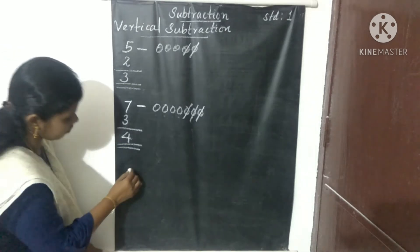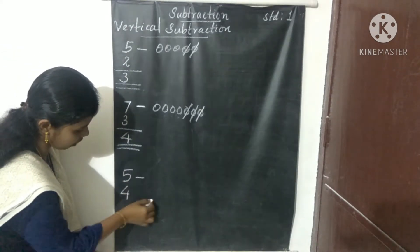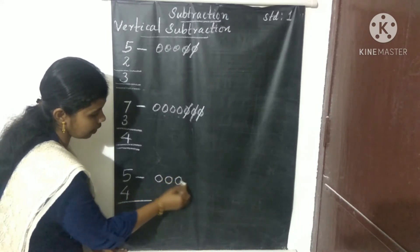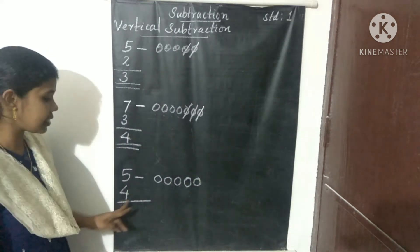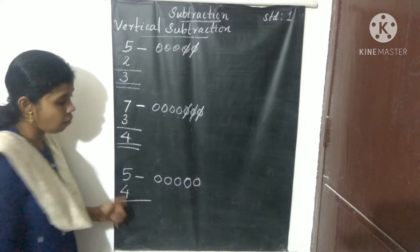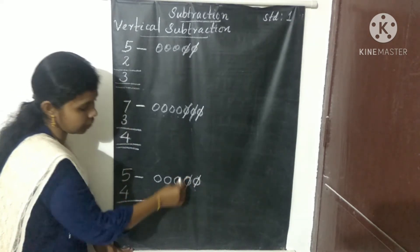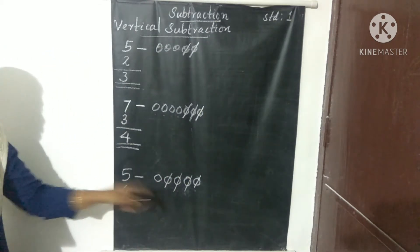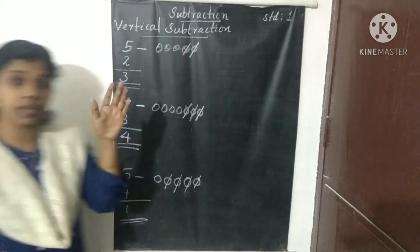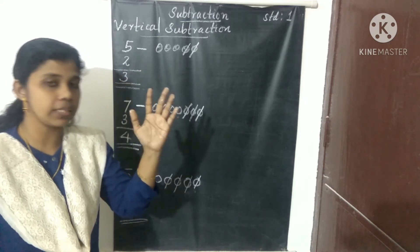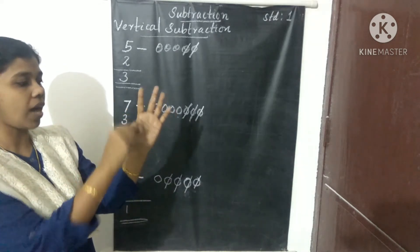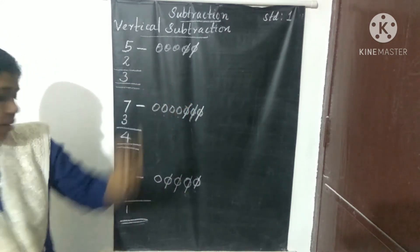Next example: 5 minus 4. In vertical subtraction, first I draw 5 beads: 1, 2, 3, 4, 5. Now cross out 4 — that is 4 taken away from 5 objects. Cross out 1, 2, 3, 4. What is the balance? 1. The answer is 1.